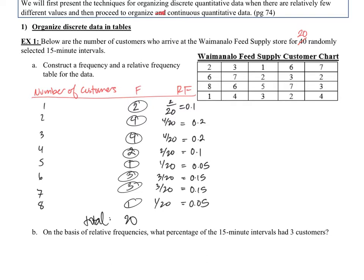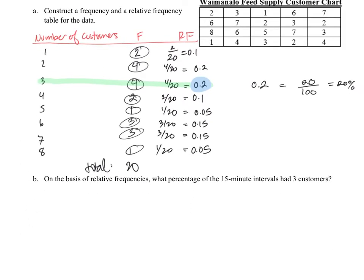Now let's answer this question: on the basis of relative frequencies, what percentage of the 15-minute intervals had three customers? The number of customers being three has a relative frequency of 0.2, which converts to 20 over 100, which equals 20%. So the answer is: 20% of the 15-minute intervals had three customers.